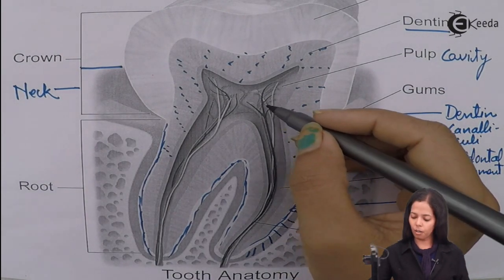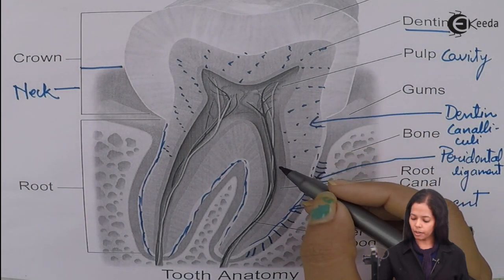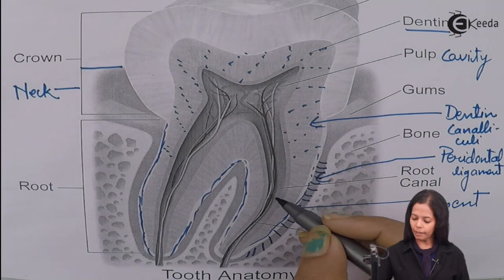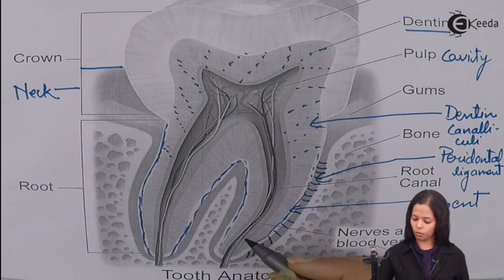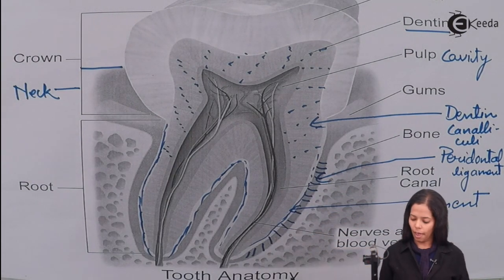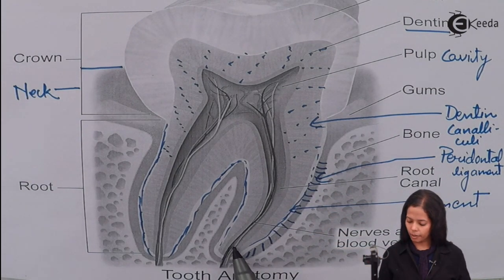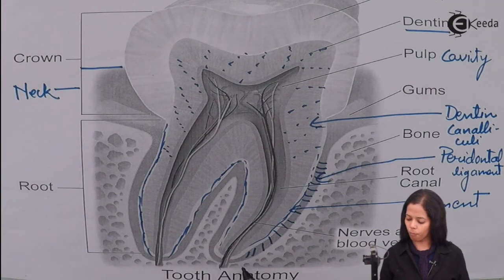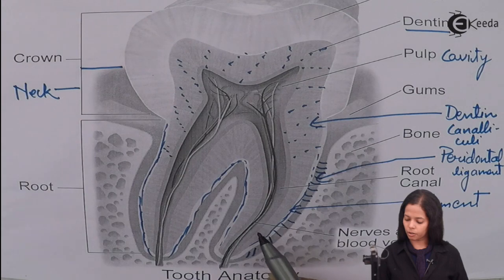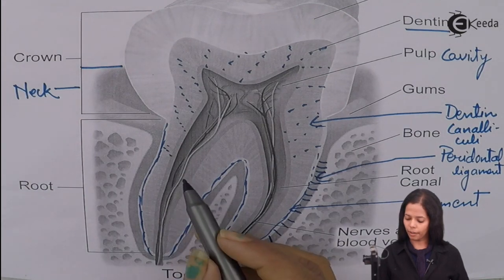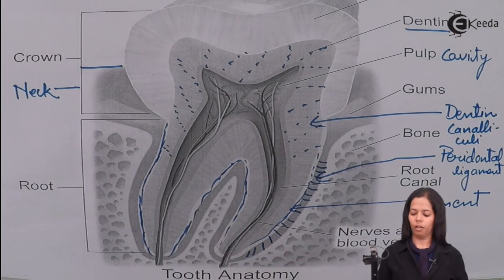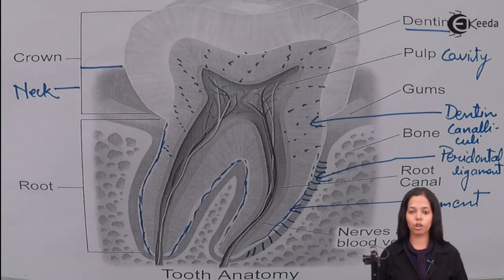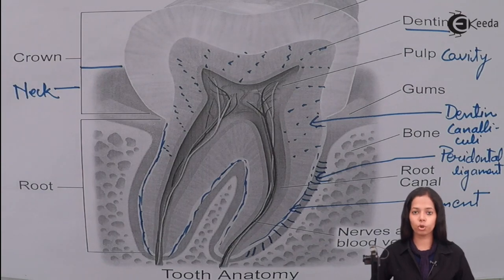Inside the pulp, it gets narrow towards the lower side and finally connects to the nerves and blood vessels of the body; this is called the root canal. We have now completed the structure of the tooth.